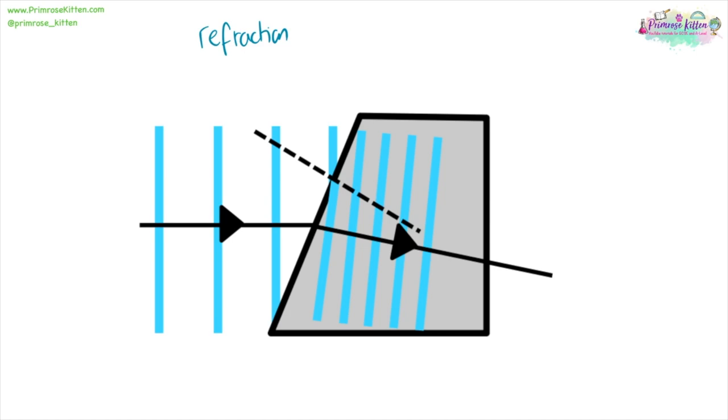But different parts of the wave change speed at different points. So this part down here that hits first is going to change speed, either getting faster or slower, before this part of the wave up here which hasn't changed medium or speed yet.